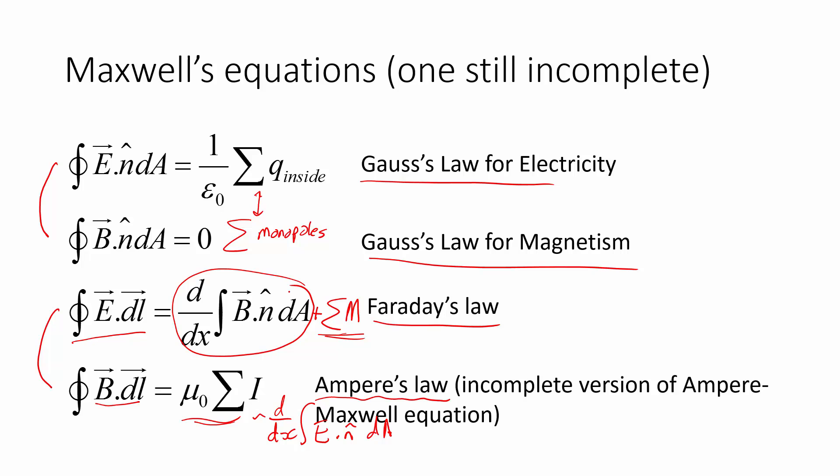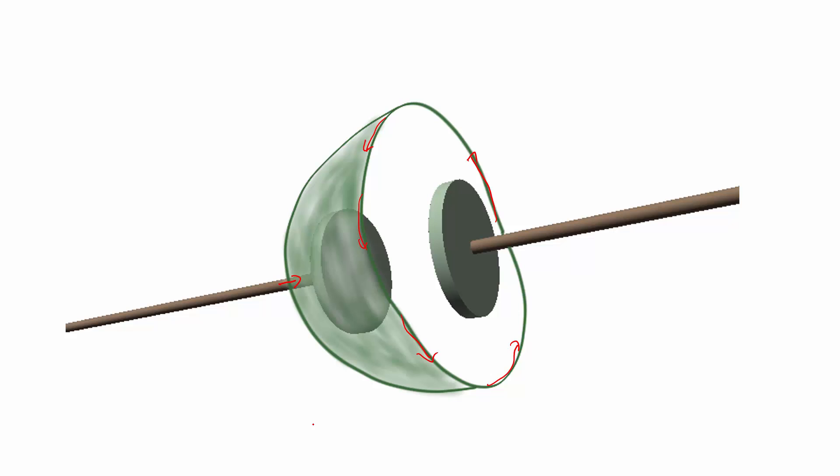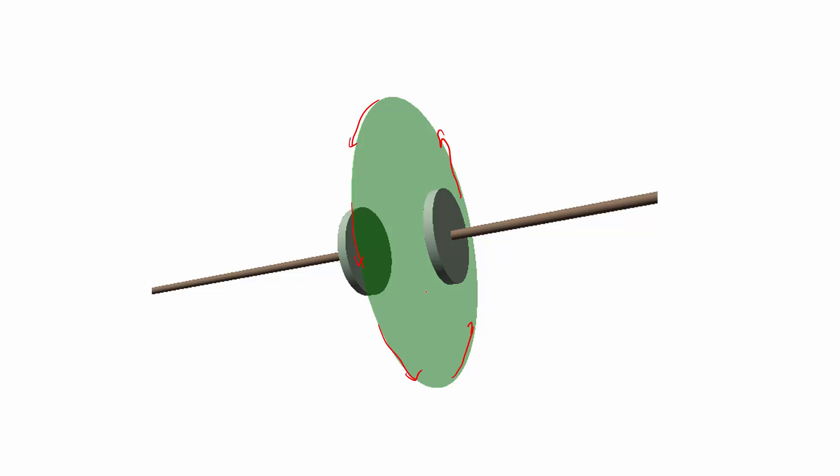And it also ties in with the equations we've got back here, because if we had something like this, something to do with the rate of change of electric field, that might solve the problem. Because remember, when there's a current coming in here, you'd have an electric field in between the two, which is steadily increasing. So maybe if we had such a term in this case, there would be no current crossing the surface, but there would be a changing electric field across it, so that might make things a little bit better.